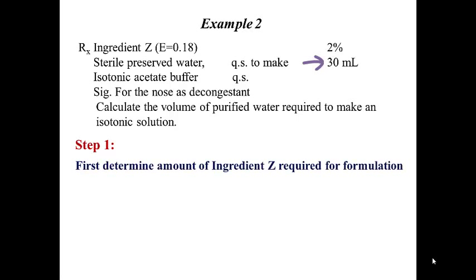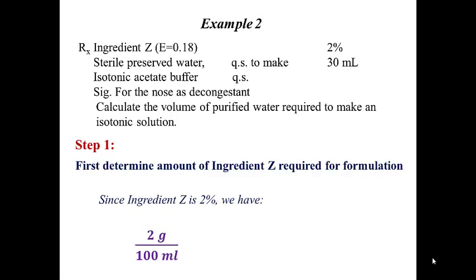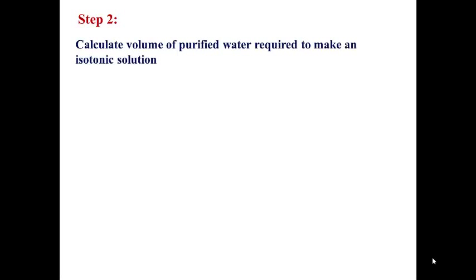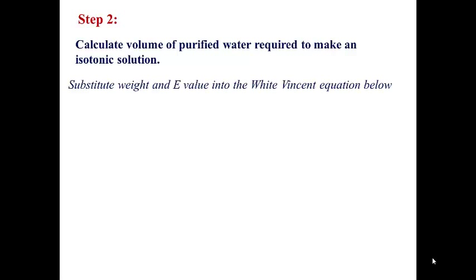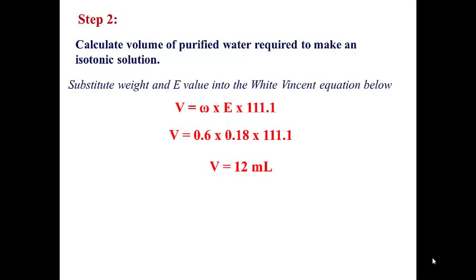For Step 1, calculate the amount in grams of Ingredient Z required for this formulation. Since Ingredient Z is 2%, that gives 2 grams in 100 milliliters. Multiplying by the total volume of 30 milliliters gives 0.6 grams. For Step 2, substitute into the White-Vincent equation: V equals 0.6 times 0.18 times 111.1, giving V equals 12 milliliters.